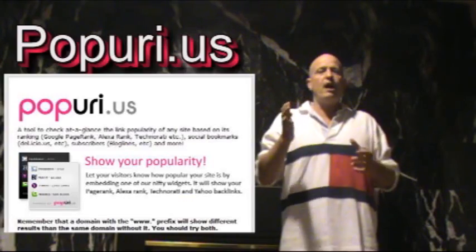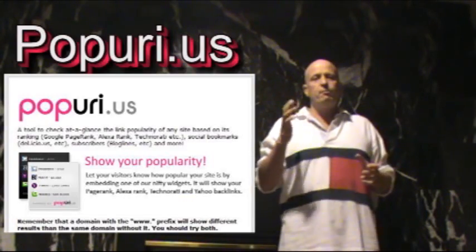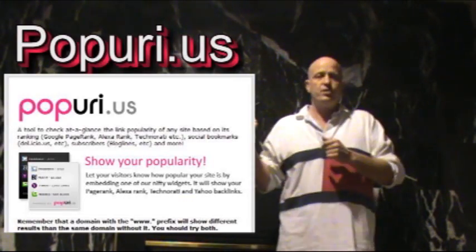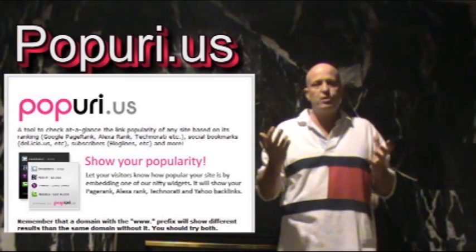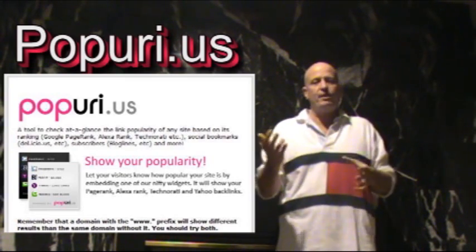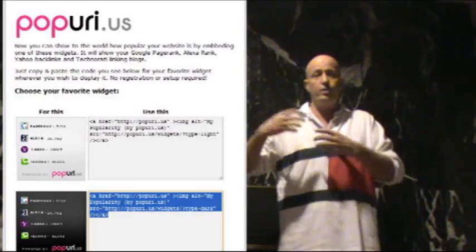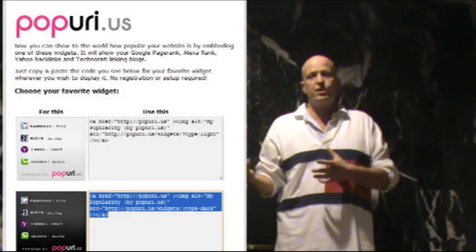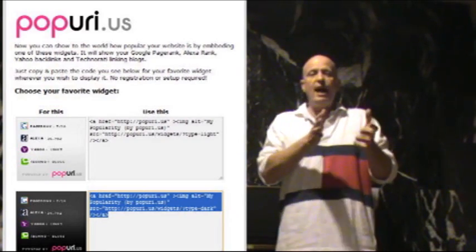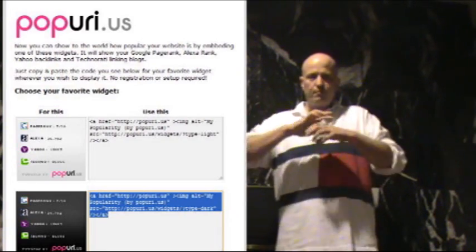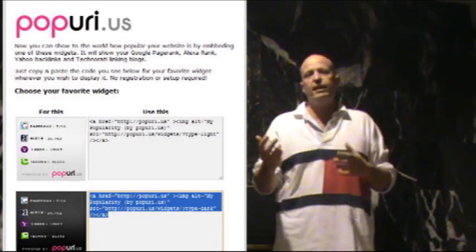It's a site, Popuri.us. You can see it here. It's a really simple site, just a couple of pages, and basically what it does is it gives you some embed code. You copy and paste it right into a post or page on your site, and from then on it will connect to all these other sites and give you all this information about your site.